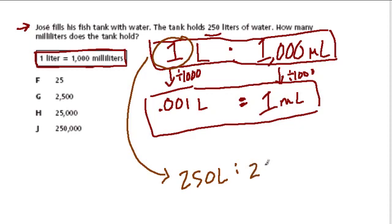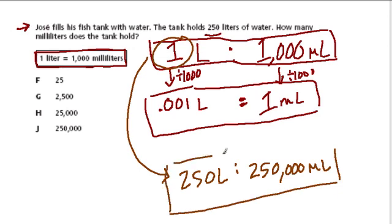So, this is 250,000 milliliters. And that's the answer. It's D. And that makes sense, because we need a lot of milliliters per every 1 liter. So we should have a much larger amount of milliliters here. Hope that helps.